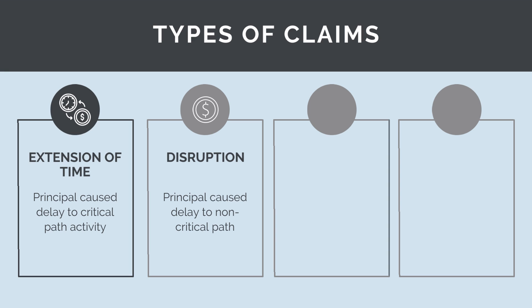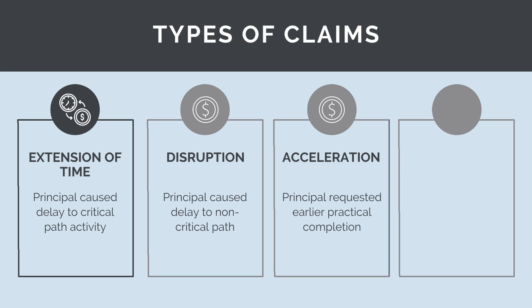A disruption claim is where the principal causes a delay or change to working practices for a non-critical path activity — an activity with float. Under a disruption claim, the contractor can only claim for money. An acceleration claim is where the principal requests an earlier practical completion date. Under this type of claim, the practical completion date will be brought forward and the contractor will receive additional money.